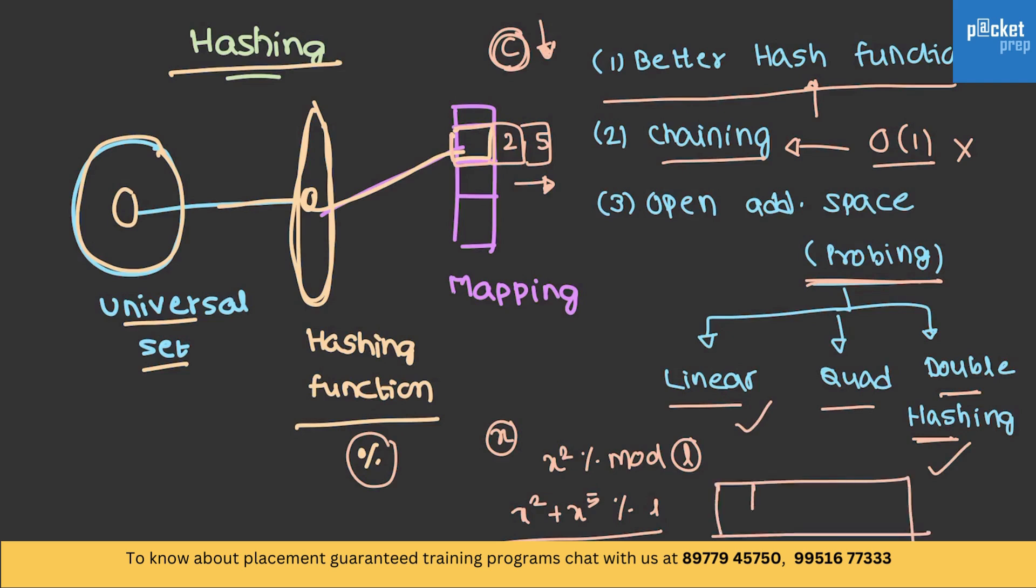Previously, I am having 2 over here and I need to store 7 also in the same position. I will check for this position. If this position is not empty, then I will move it to the next position. This is called linear probing.